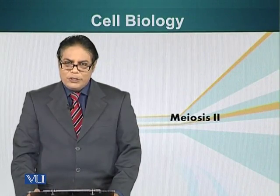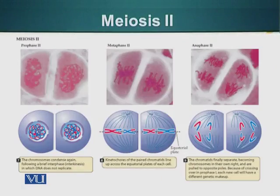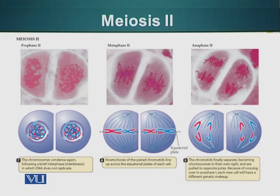In this module, we will talk about meiosis II. In meiosis II, the homologous chromosomes have separated in meiosis I and the nuclear envelopes started forming in telophase I. The chromosomes are becoming decondensed. In prophase of meiosis II, the chromosomes start to condense again and the nuclear envelope also starts to disintegrate.